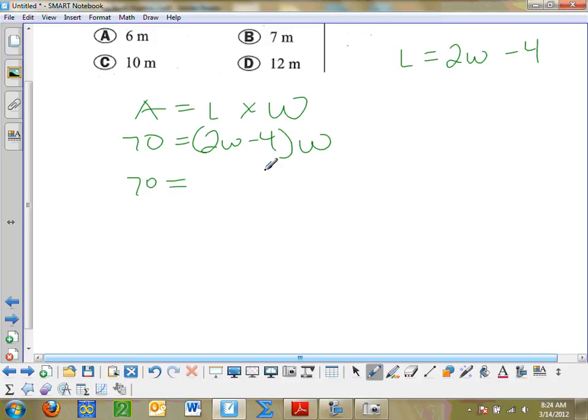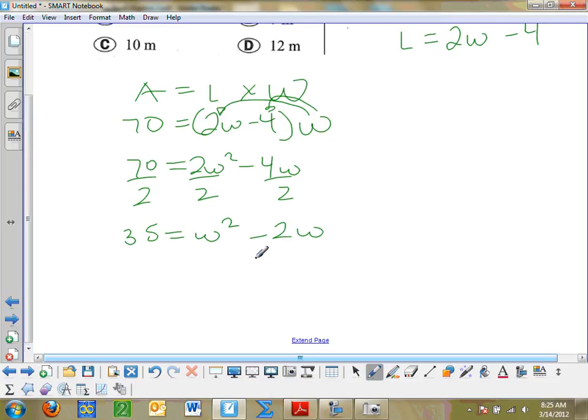And now I have a nice simple equation with only one variable that I can solve. So I get 70 is equal to... Here you go ahead and distribute. W times 2w, I get 2w squared. W times negative 4, I get negative 4w. Now all these numbers can be divided by 2. So we can always just divide the whole equation to make the numbers a little smaller to work with.